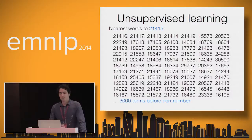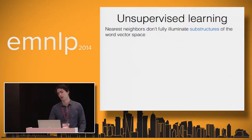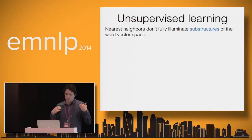What I actually want to argue is that nearest neighbors are a very bad way of probing word vector spaces and analyzing word vectors. The main limitation is that nearest neighbors don't fully illuminate the sub-structures often present in word vector spaces. This is simply because nearest neighbor measures — typically Euclidean distance or cosine similarity — are single scalars, a single number meant to summarize very complex linguistic similarities that exist between two words.